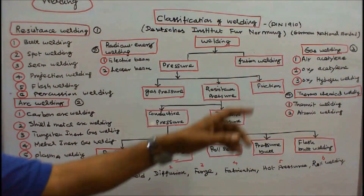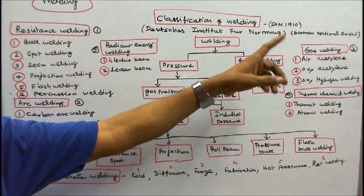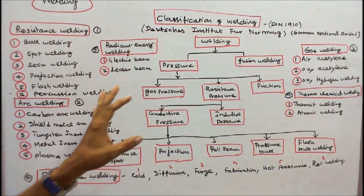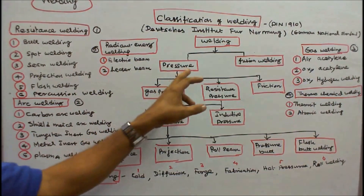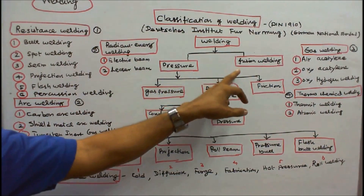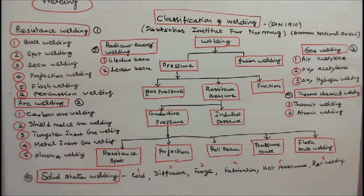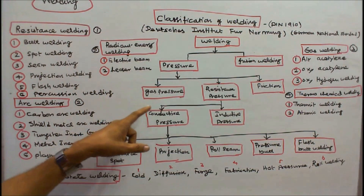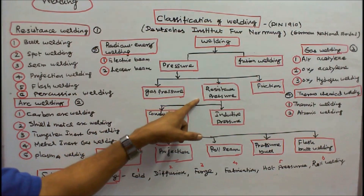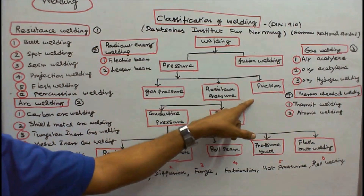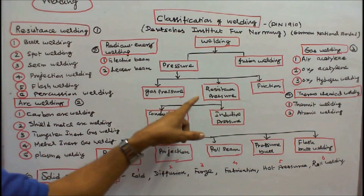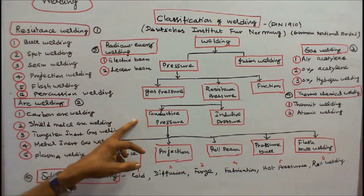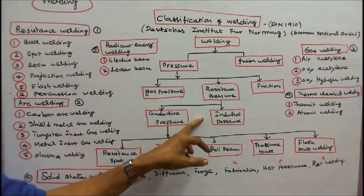As per the German national standard DIN 1910, welding is broadly classified into two: one is pressure welding, another is fusion welding. There are three types of pressure welding: number one, gas pressure welding; number two, resistance pressure welding; number three, friction welding. The fourth is inductive pressure welding.